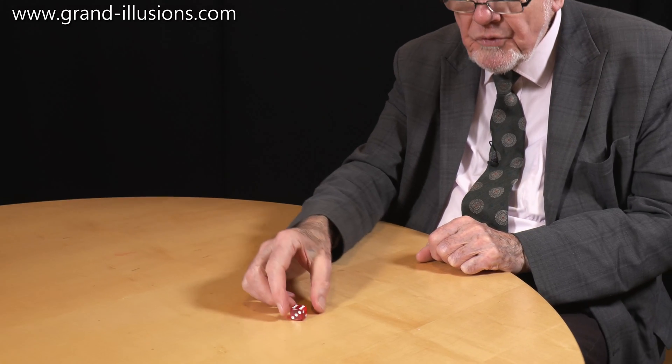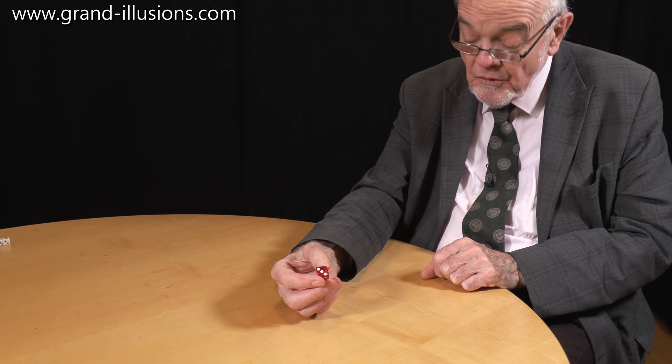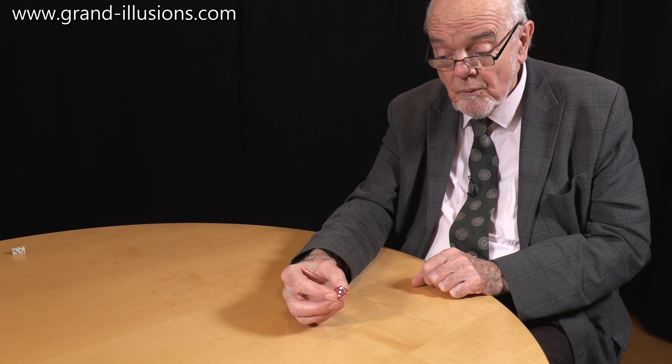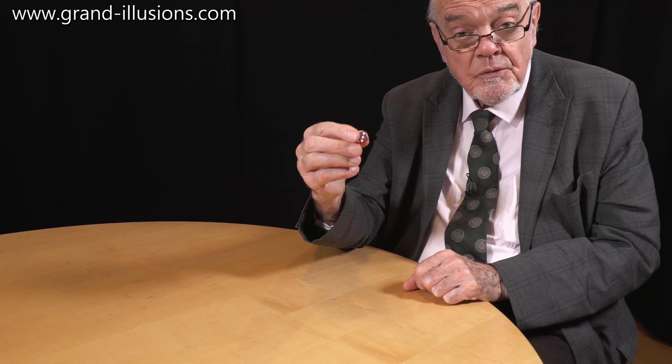This is something that bothers me. Has it ever bothered you that there must be something... there are loaded dice of course around, and I've got one or two in my collection, but is this a loaded die, or is it perfectly symmetrical?